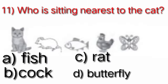Question number 11: Who is sitting nearest to the cat? Dear student, in this picture we can see a cat, and a rat is sitting nearest to the cat. Now let's see the options. Option A: fish. Option B: cock. Option C: rat. Option D: butterfly. Yes, the rat is sitting nearest to the cat, which is our option C. So we will put a tick on option C.